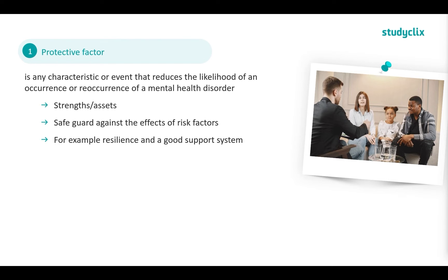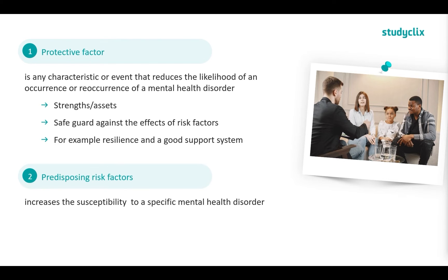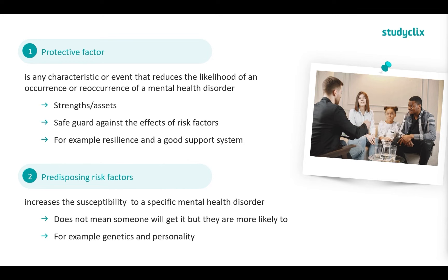Moving on to our risk factors, we have predisposing risk factors. This increases the susceptibility to a specific mental health disorder. Just because you are more susceptible does not mean that you will get the disorder, but it does mean you are more likely to. This can include things such as genetics as well as your personality. In terms of genetics, this is hereditary — if your parents have a history of mental health issues, they can pass this down through your genes. Personality can include things such as being high in the trait neuroticism, meaning you're very anxious.